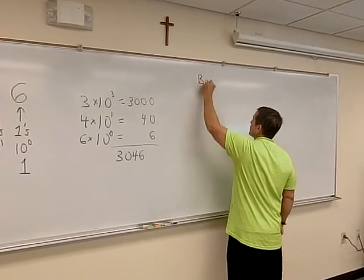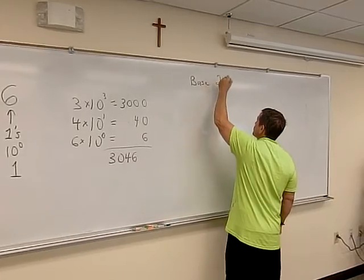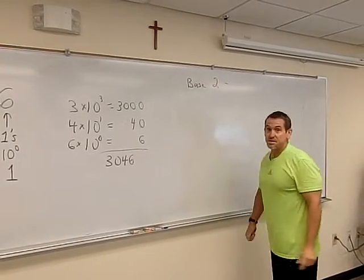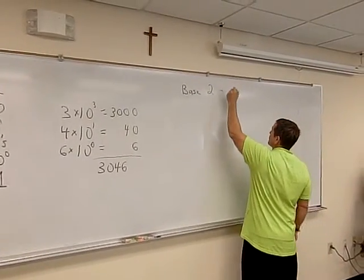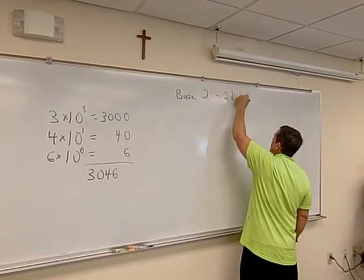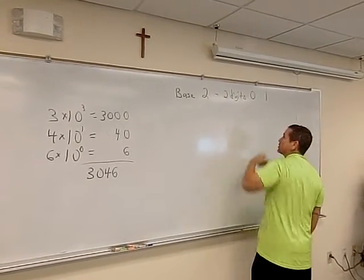In computers use base two. Base two just has two digits, or two symbols, whatever you want to call them. Those two symbols are zero and one.